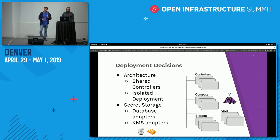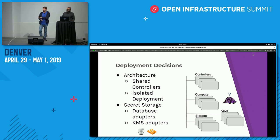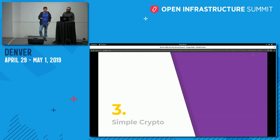After placing Barbican, the next choice is which backend to use. There are two types of backend storage. First are database adapters, where an encryption engine encrypts the key and stores data in a database. Second are KMS adapters, where you take the secret and store it directly into your KMS. We'll go through the different choices now.